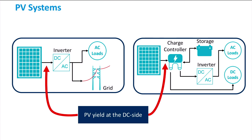We will use them again later in this course when we look into the detailed design strategies for different PV systems. The PV yield at the DC side, which is observed after the PV modules and before any subsequent power electronics, is the ratio between the instantaneous PV power generated and the PV power generated in the standard test conditions.